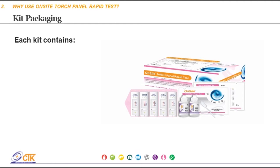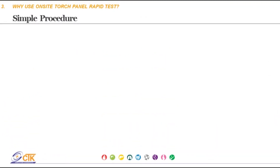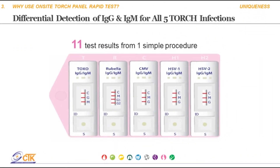Each kit contains all supplies needed for screening: 10 panel devices, 10 plastic droppers, two sample diluent bottles, and one package insert. The procedure is simple: add one drop of serum, plasma, or whole blood into each of the five sample wells using the dropper provided, then add two drops of sample diluent, wait 10 to 15 minutes, and read the result. Each of the five test panels provides IgM and IgG results, plus semi-quantitative rubella IgG, for a total of 11 results.